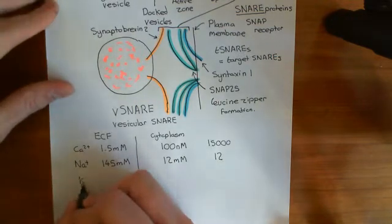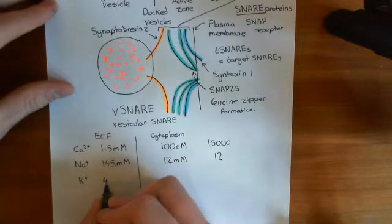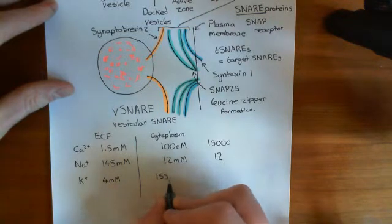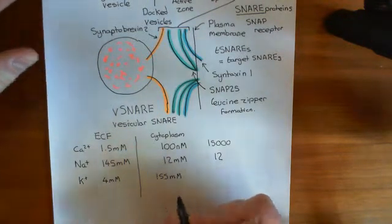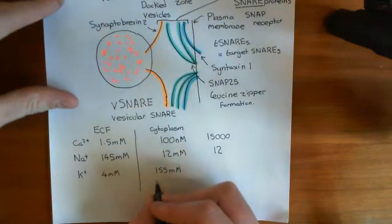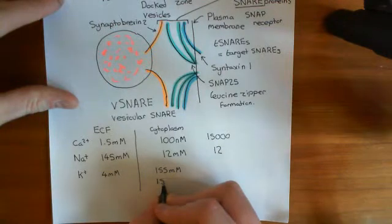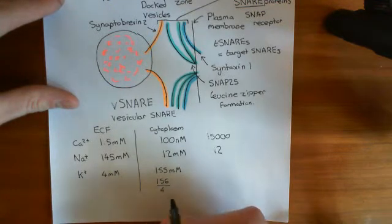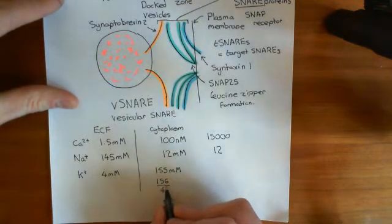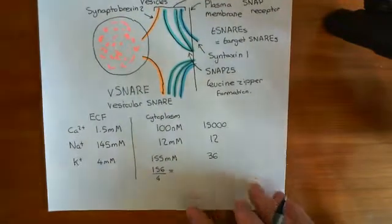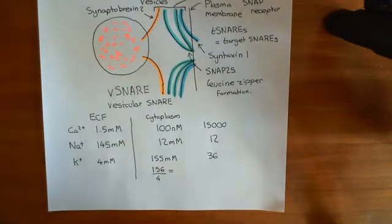Finally, if we look at potassium, the potassium concentration extracellularly is 4 millimolar. And the potassium concentration intracellularly is around 155 millimolar. So if we round this down to, wait, round it up to 156, then if we divide that by 4, we'll get a perfect answer. I think this will give us 36. So a 36-fold gradient, favoring movement out of the cytoplasm in this case.